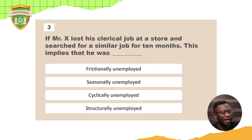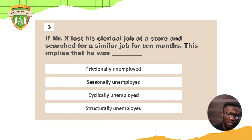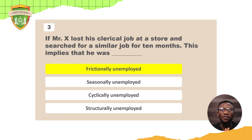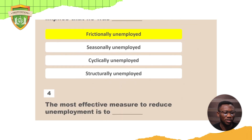Question three: Mr. X lost his clerical job at a store and searched for a similar job for 10 months — was he frictionally unemployed, seasonally unemployed, cyclically unemployed, or structurally unemployed? The answer is frictionally unemployed. It's about the time gap between when you resign from a job and when you start a new one — that friction period is frictional unemployment.